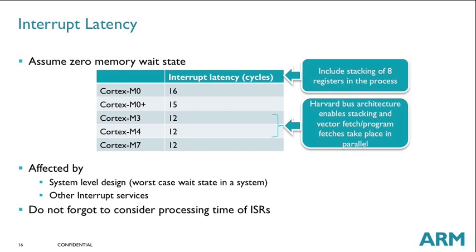Interrupt latency is one important aspect of embedded processor performance, and the Cortex-M processors have very low interrupt latency, ranging from 12 cycles in the Cortex-M3, M4, and M7, up to 16 cycles on the Cortex-M0. The difference is mainly because this latency includes the stacking operation, which pushes eight registers to the stack. With a Harvard bus architecture on Cortex-M3, M4, and M7, stacking, vector fetching, and program fetching can be handled in parallel. Note that interrupt latency figures in a real system can be higher due to wait states in memory systems and potentially due to another interrupt service being executed.